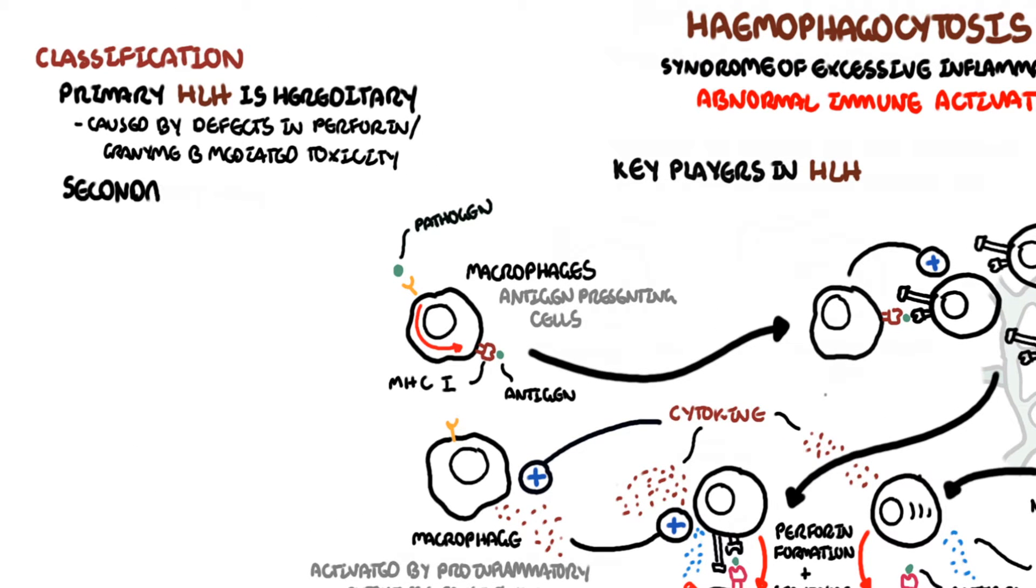Secondary causes of hemophagocytic lymphohistiocytosis include infections, particularly Epstein-Barr virus, malignancies as well as autoimmune diseases.